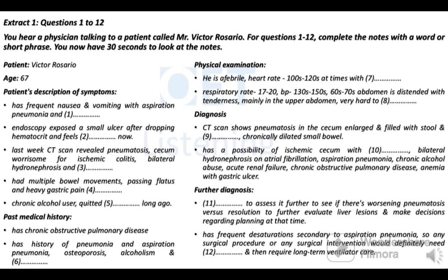I would recommend getting a repeat CT scan to assess it further — to see if there's worsening pneumatosis versus resolution, and to further evaluate the liver lesions and make decisions regarding planning at that time. Since you have frequent desaturations secondary to your aspiration pneumonia, any surgical intervention would certainly require intubation, which would then necessitate long-term ventilator care. So I will look at your CT scan and make decisions based on the findings.